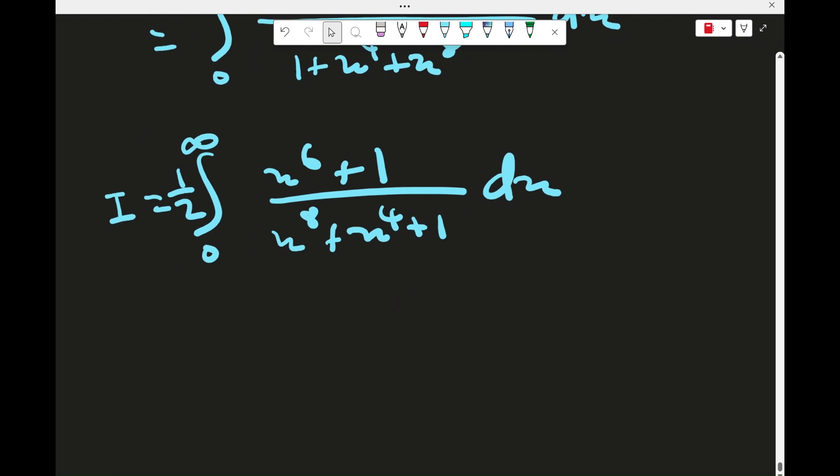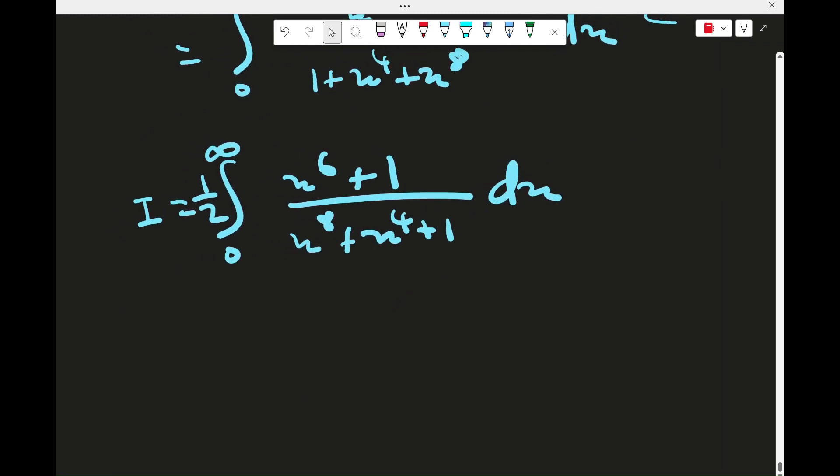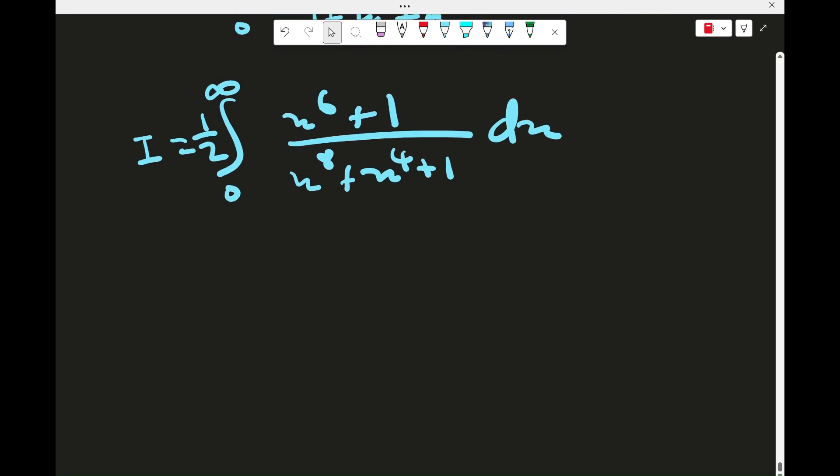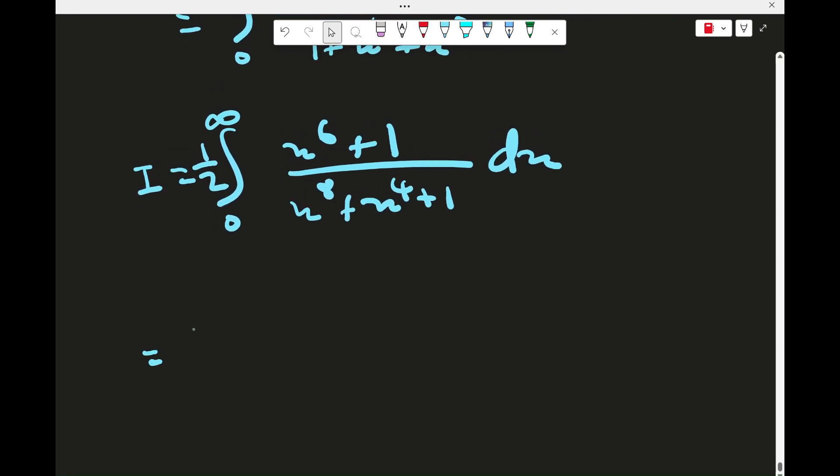Now, what can we do? Well, might as well just do what comes to mind. This denominator here is a geometric series. Notice how we have 1 times x to the 4 to get the next term, then multiply by x to the 4 to get the next term. So the common ratio is x to the 4.